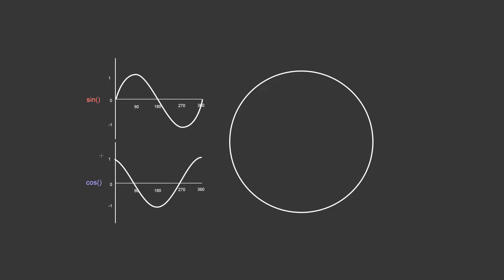As you can see here we have these two graphs: sine and cosine. When you feed a certain degree value in here — and this could be converted to radians and it would look the same — so 90 degrees returns a certain value when fed into a sine function, and in the cosine function it returns a different value. If we feed 90 into a sine function, it returns a value of one. If we feed 90 into a cosine function, it returns a value of zero.